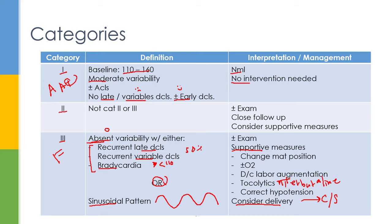Category 2 is everything in between — roughly a B+ to C-. These aren't all emergencies like Category 3, but they require closer follow-up. Sometimes you just monitor, sometimes you examine the patient, and if needed, apply supportive measures to reduce stress on the mother or fetus.